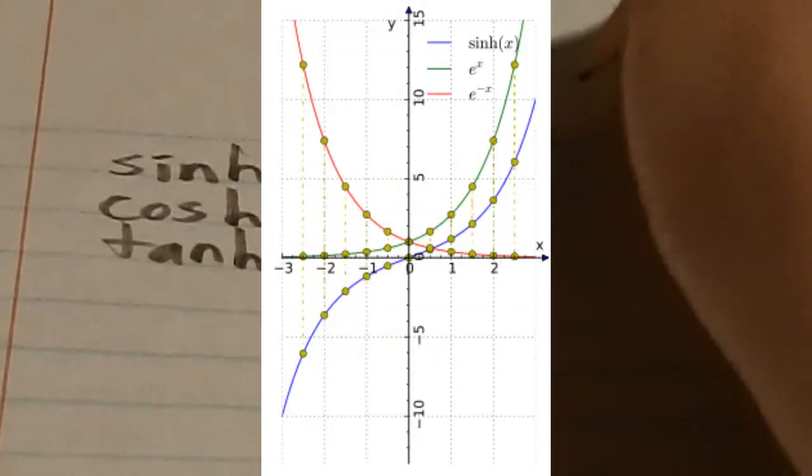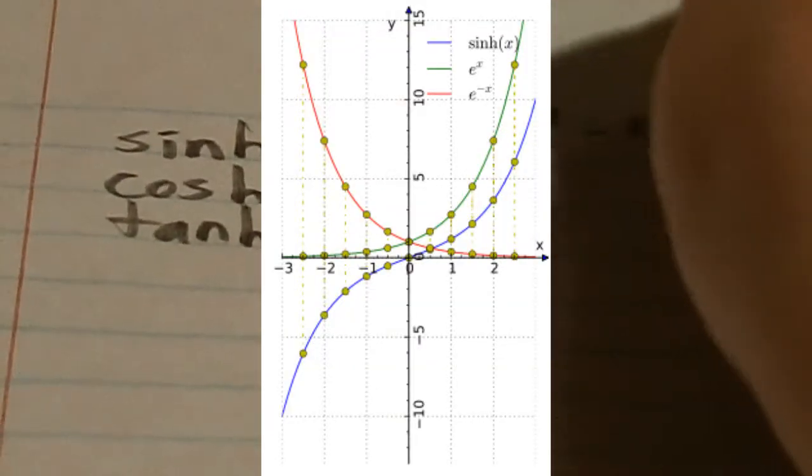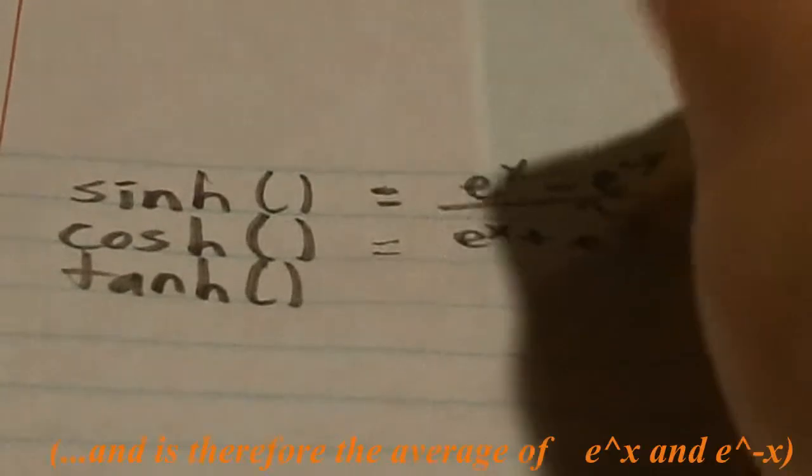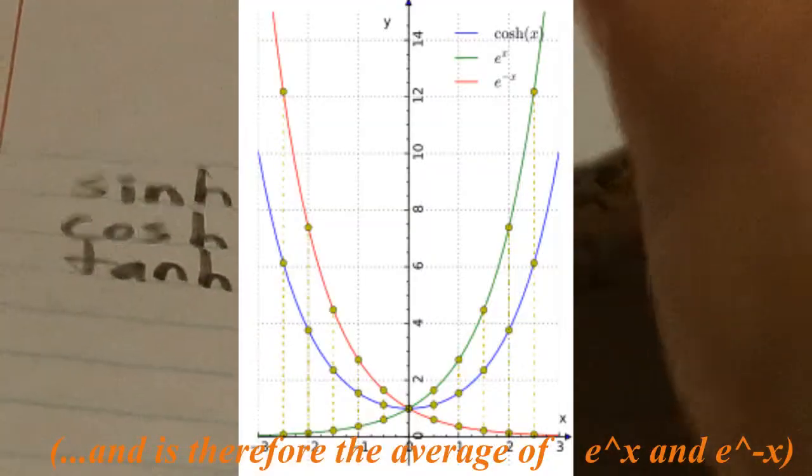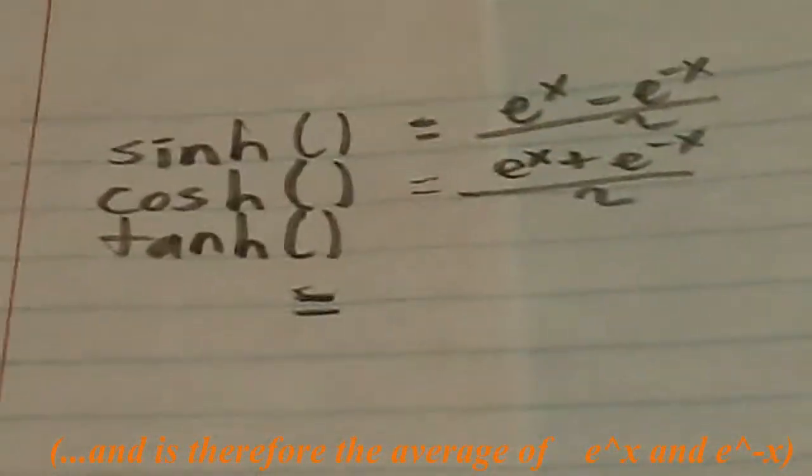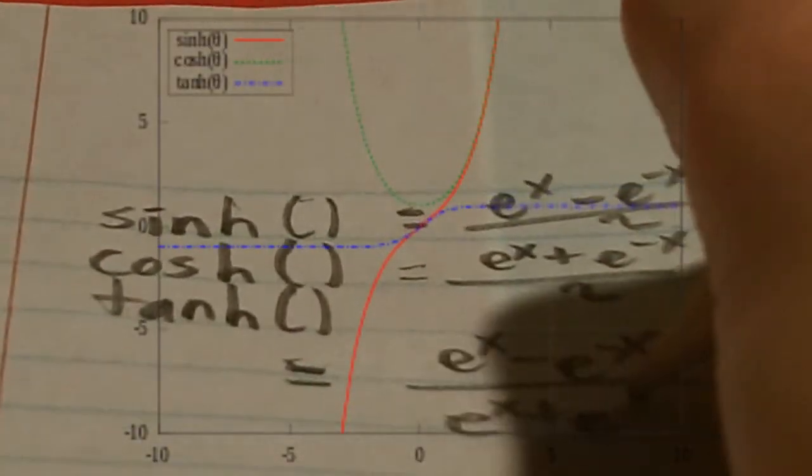And so, shine, or well, I prefer to call it shine, is equal to e to the x minus e to the negative x all over 2. And cosh is almost the same thing. It's e to the x plus e to the minus x all over 2. And so, this hyperbolic tangent, therefore, is the ratio sine over cosine, and we basically get e to the x minus e to the negative x over e to the x plus e to the negative x.